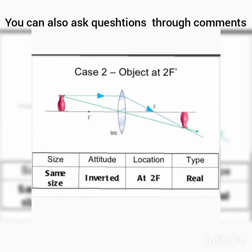Case 2: Object at 2f. Drawing the two rays, they meet at a point on the other side. The image is formed at 2f on the other side of the lens. The image size is the same as the object, and the attitude is inverted.